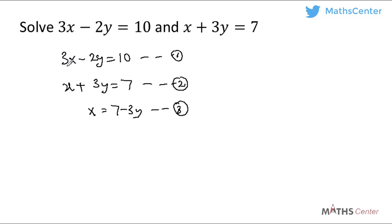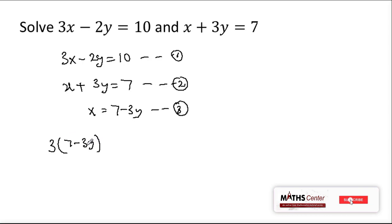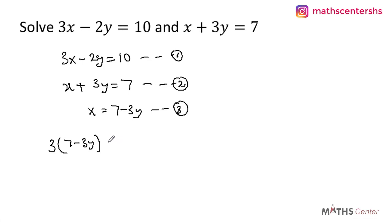From equation 1 we have 3x minus 2y is equal to 10. But we now know that x is equal to 7 minus 3y. So I will replace x in equation 1 with 7 minus 3y. x here is 7 minus 3y which is a binomial, and I'm multiplying 7 minus 3y by 3, so I have to put the binomial in a bracket. So we have 3 into bracket 7 minus 3y, minus 2y is equal to 10.